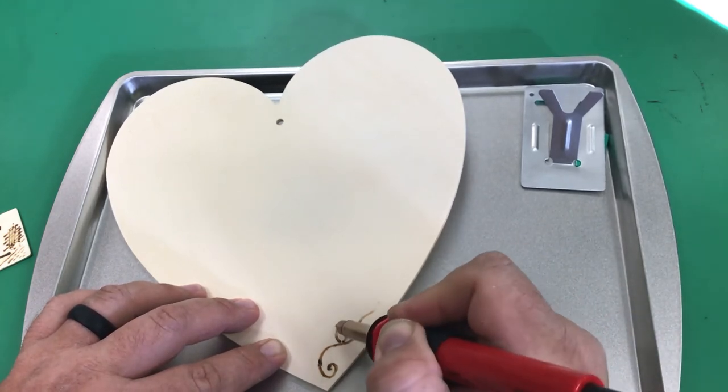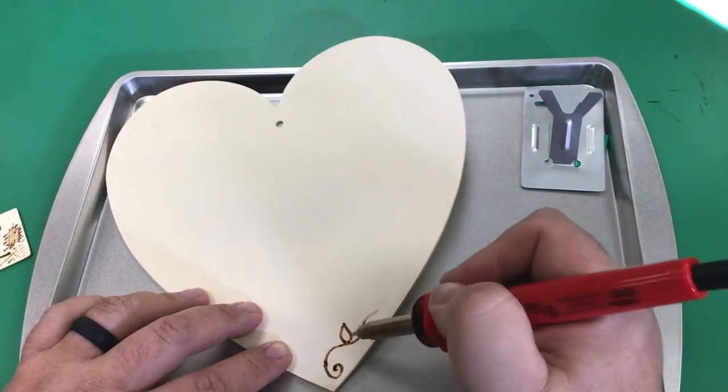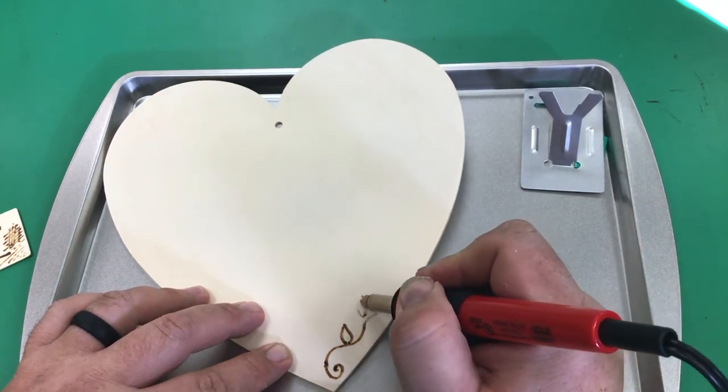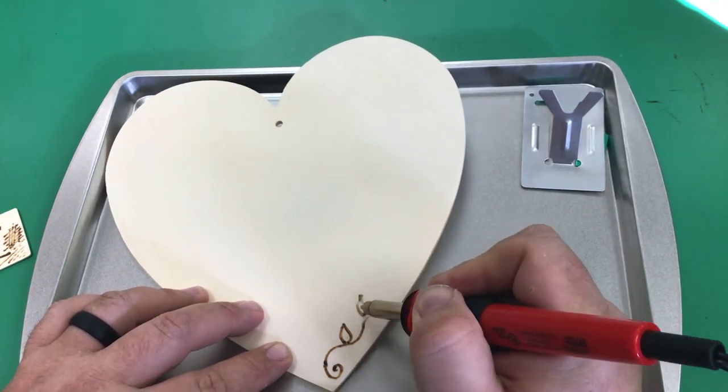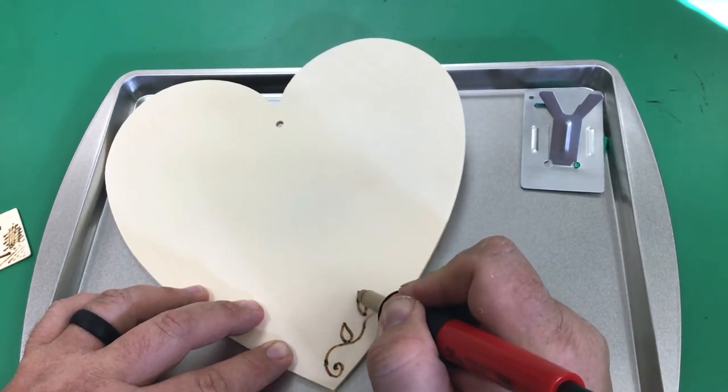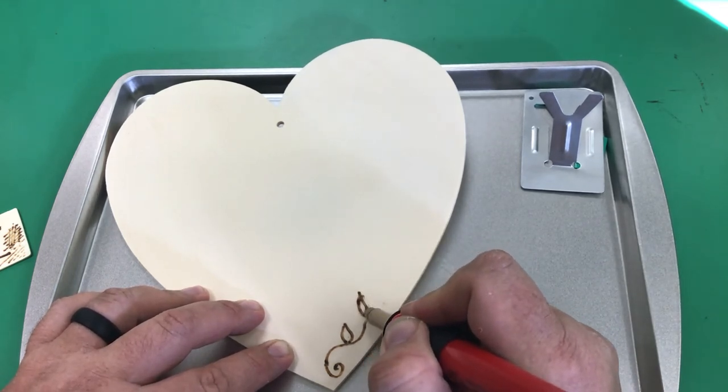I wonder what people do with wood burning. Do they just rub a stain on it? Could I water down an acrylic and do kind of a wash over top of it so it has an overall color, but then you would still see the wood burning? Leave some thoughts in the comments, I'd appreciate it.